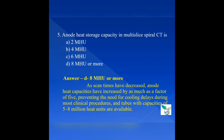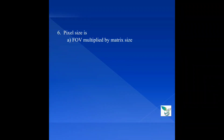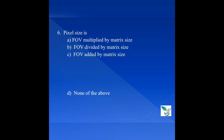Question 6: Pixel size is — Option A: FOV multiplied by matrix size (FOV means field of view), Option B: FOV divided by matrix size, Option C: FOV added by matrix size, Option D: None of the above. The answer is Option B: FOV divided by matrix size. A pixel is a two-dimensional picture element that makes up a matrix; each pixel represents a CT number and is a building block of the matrix and image.